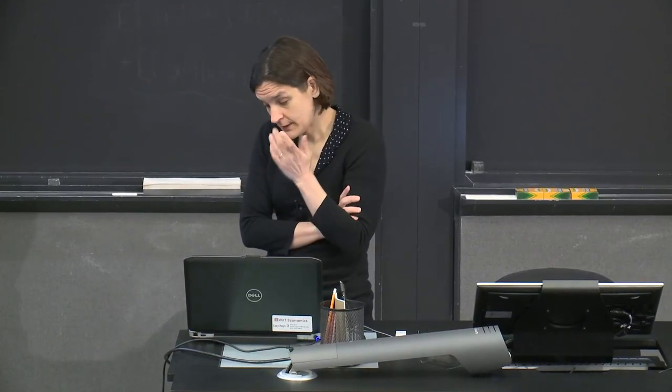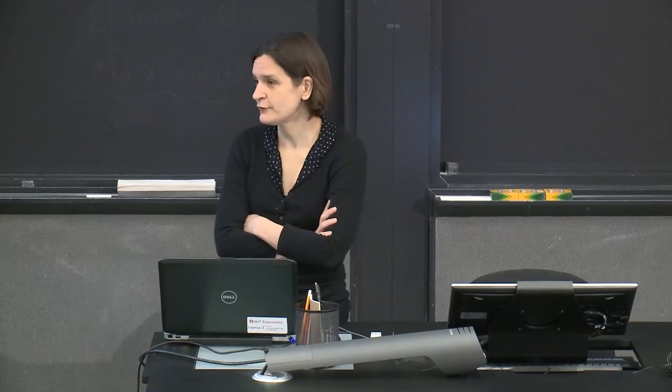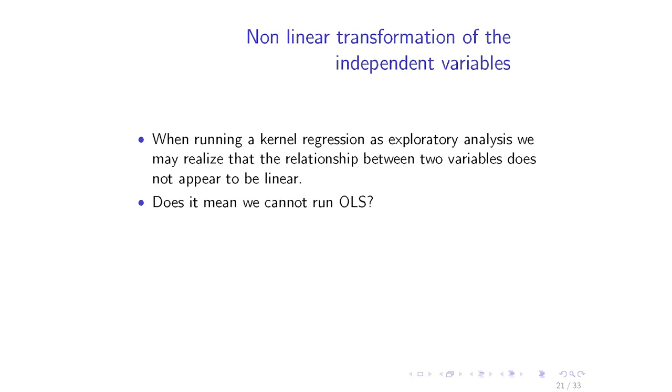Suppose you start with a dataset and you have some variables — say, demand for gasoline, how much gasoline people purchased, and the price of gasoline. As good trained data scientists, you start by looking at some pattern in the data. The first thing you decide to do is run a kernel regression of the demand for gasoline on the price of gasoline.